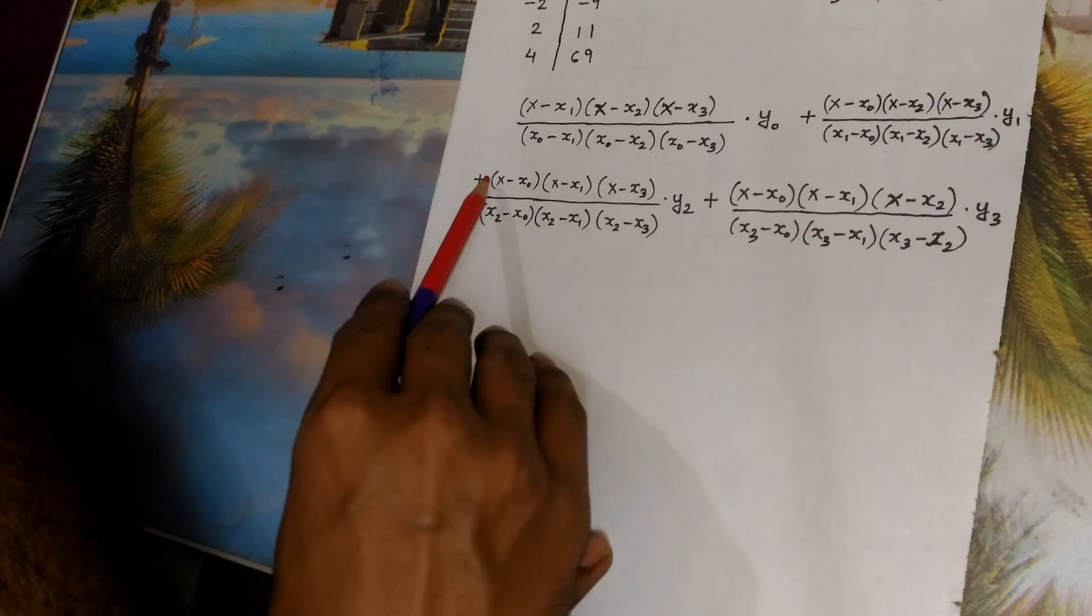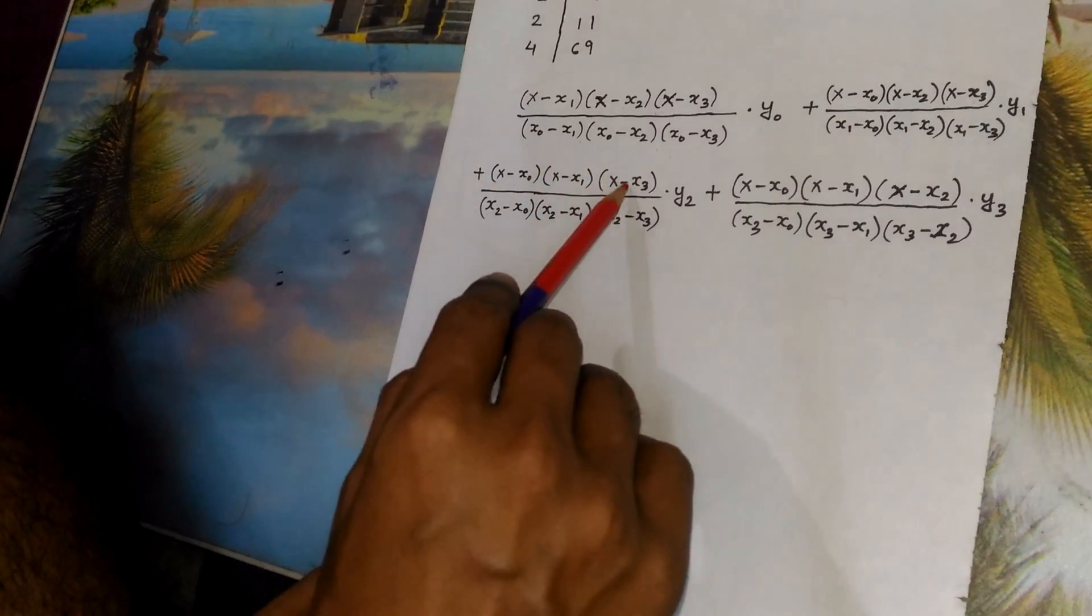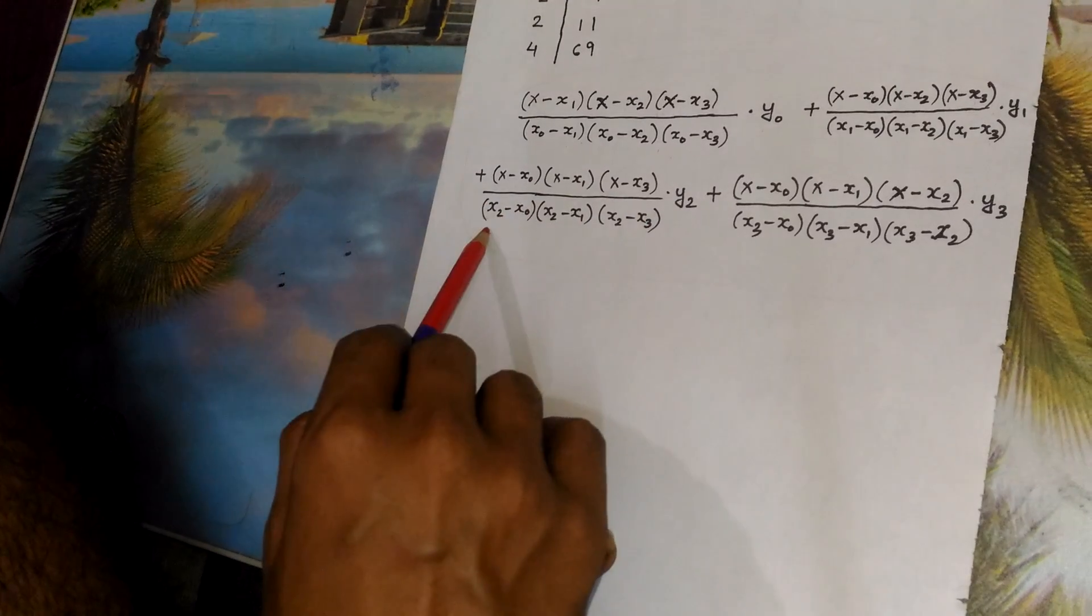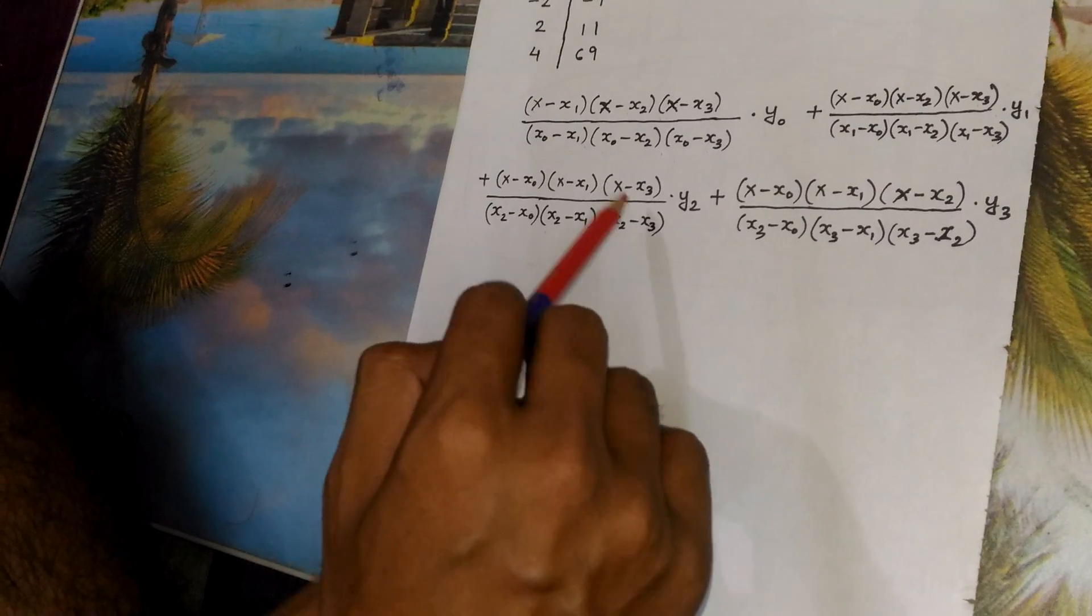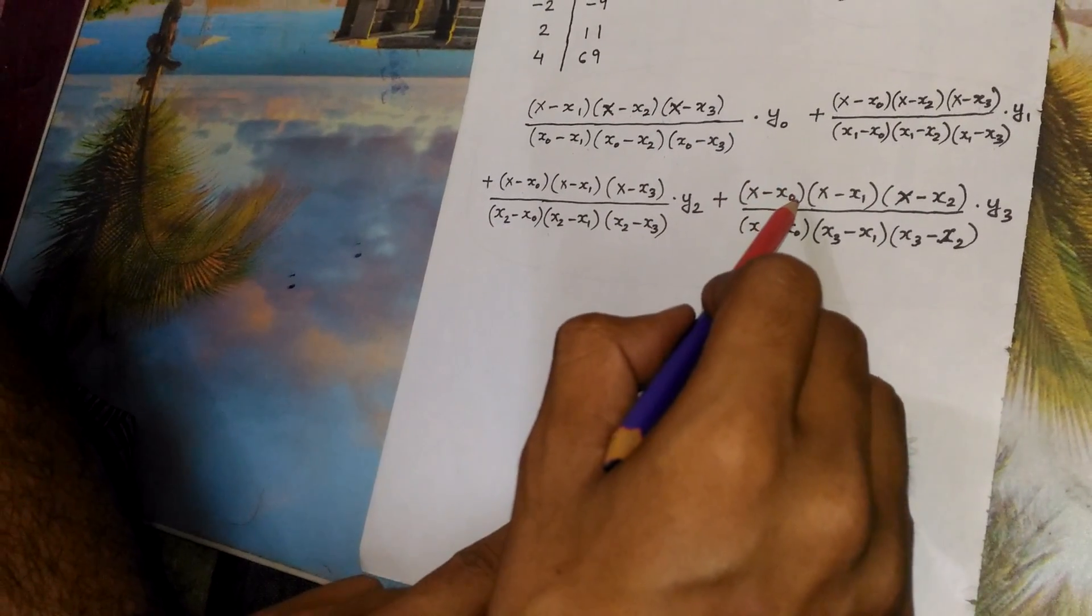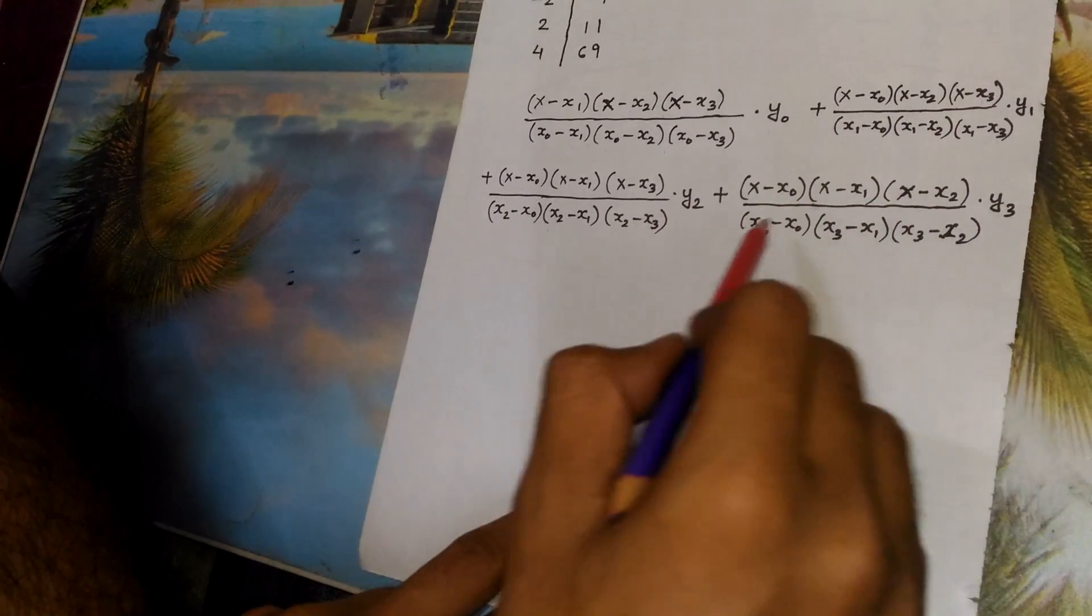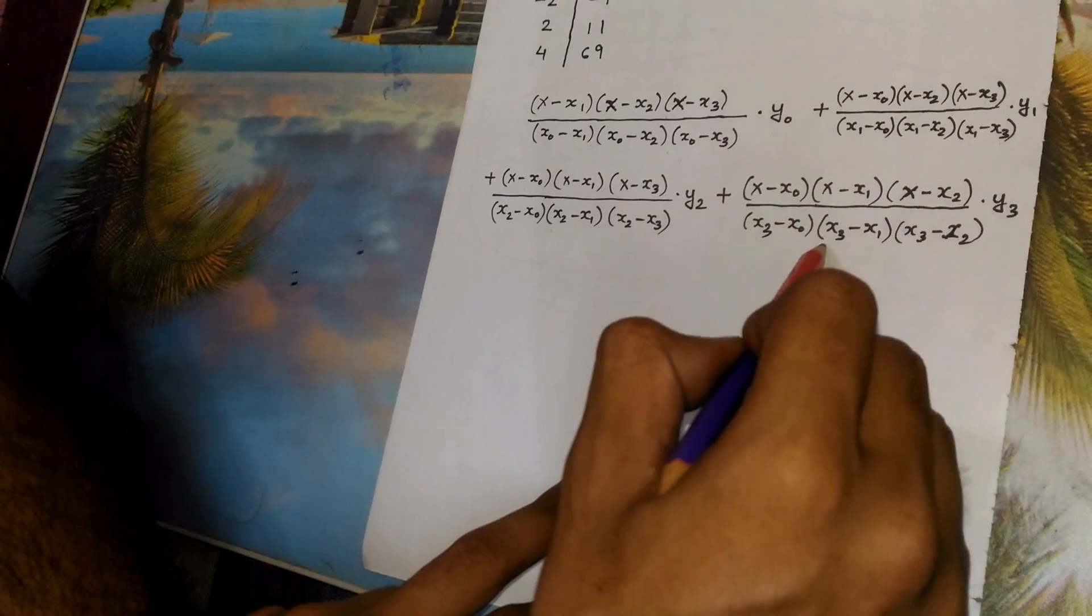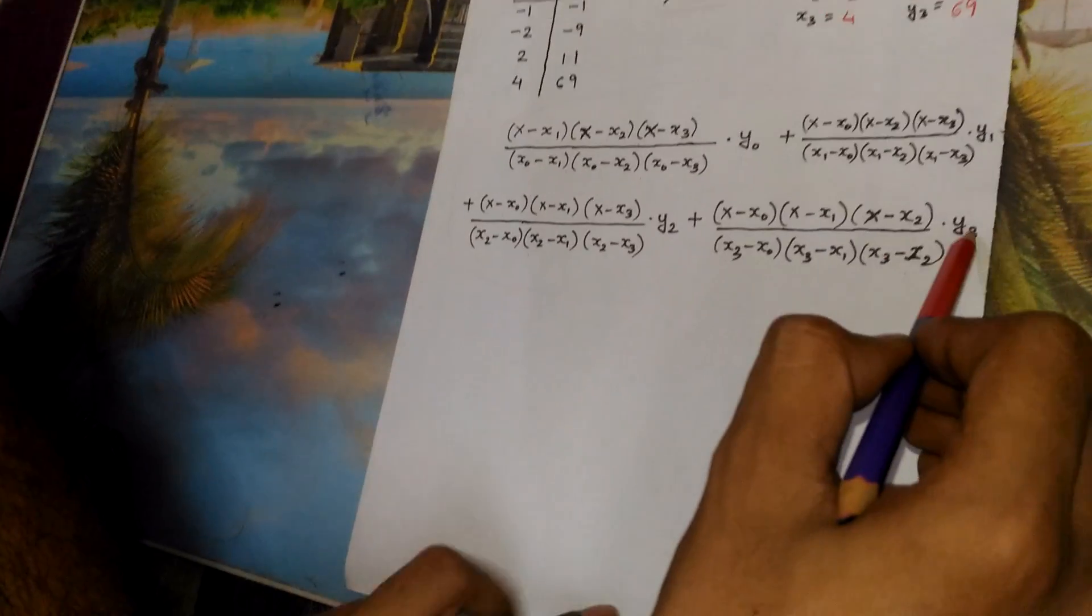Plus x minus x0 into x minus x1 into x minus x3 whole divided by x2 minus x0 into x2 minus x1 into x2 minus x3 whole multiplied by y2. Plus x minus x0, x minus x1, x minus x2 whole divided by x3 minus x0, x3 minus x1, x3 minus x2 whole multiplied by y3.